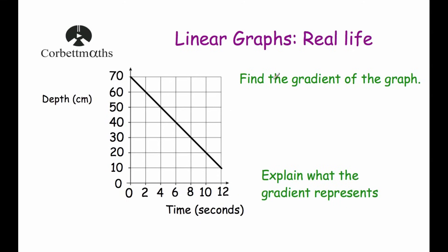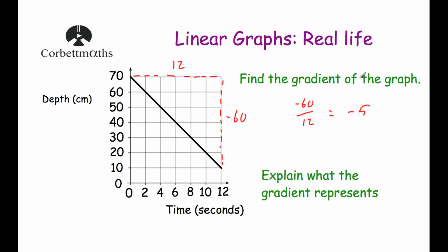The next question says: find the gradient of the graph. At zero seconds the depth was 70, and at 12 seconds the depth was 10. Using rise over run (or y2 minus y1 over x2 minus x1): the run is 12, and the rise is negative 60 (going from 70 down to 10). So the gradient is negative 60 divided by 12, which equals negative 5.